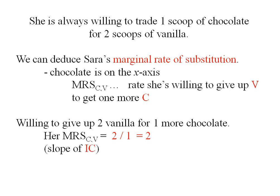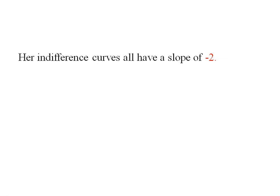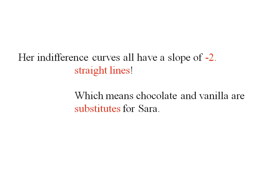This is also the slope of her indifference curve if we put a negative on it, so her indifference curves all have a slope of negative two. Since the slope is constant, the indifference curves are straight lines. This means chocolate and vanilla are substitutes for Sarah — substitutes always have straight-line, constant-slope indifference curves.